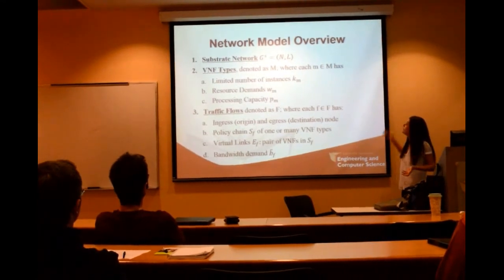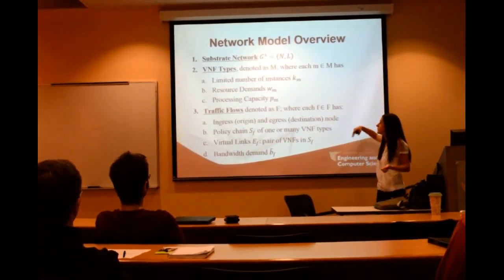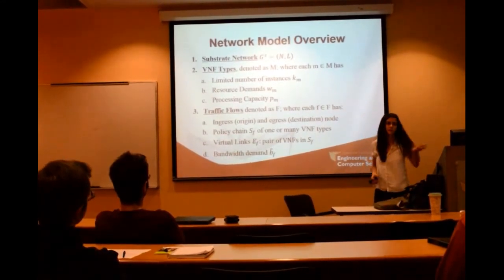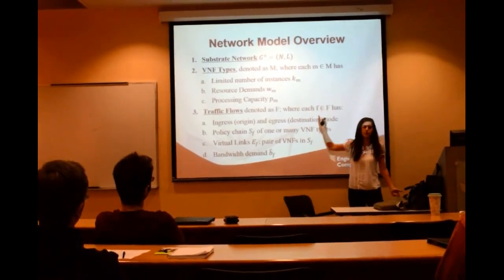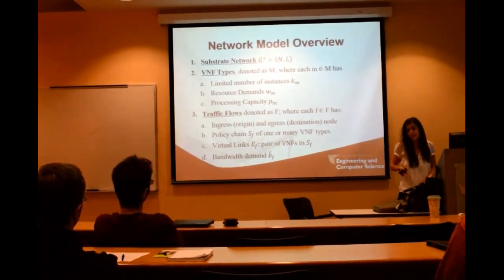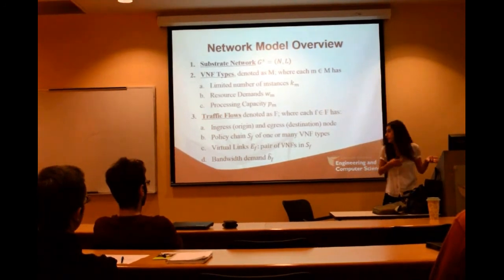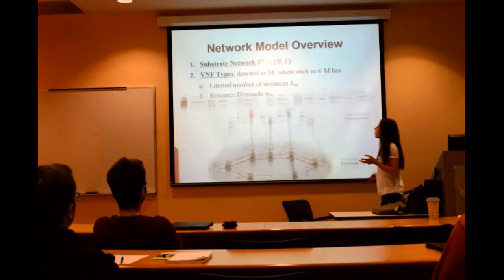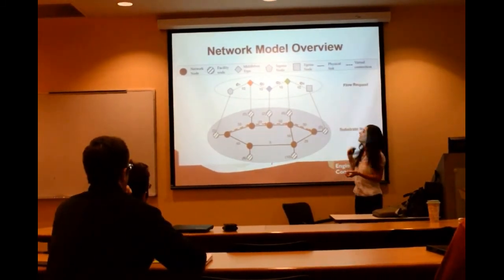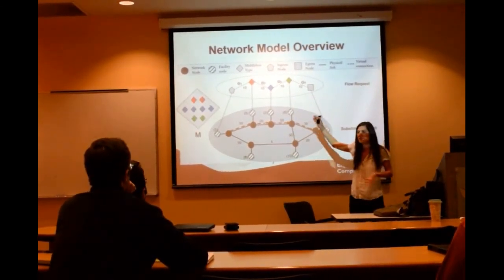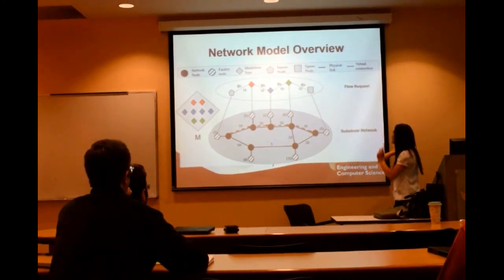Looking at the model overview: you have the physical substrate network (the cloud data center network), you have VNF types — the different building blocks you can place — and for each VNF type, say a firewall, you have a limited number of instances. You have resource demands: running a firewall on a server will consume that server's resources, and every VNF instance has a processing capacity. You also have traffic flows, where each flow must traverse a chain of middleboxes, and every flow has a bandwidth requirement. The objective is to decide where to place that set of VNF instances such that we can satisfy all the flows.